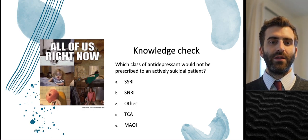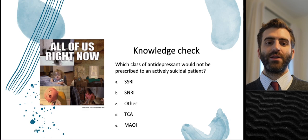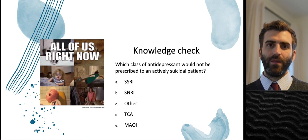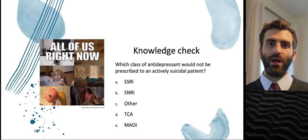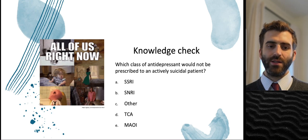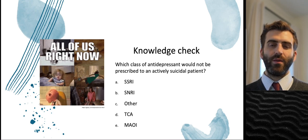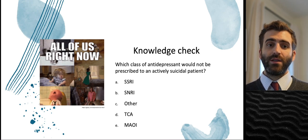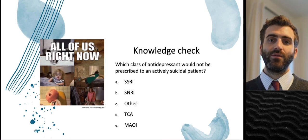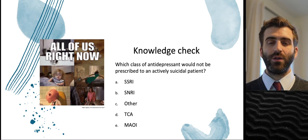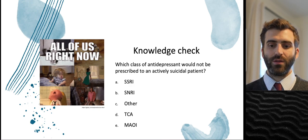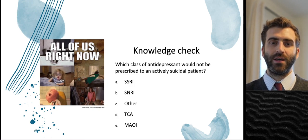Knowledge check: which class of antidepressant would not be prescribed to an actively suicidal patient — SSRI, SNRI, other, TCA, or MAOI? The best answer is TCA. While TCAs can sometimes be used in someone who is suicidal, remember they are fatal in overdose. You don't want to give someone the tool they could use to commit suicide, so be very careful with TCAs and overdose risk.